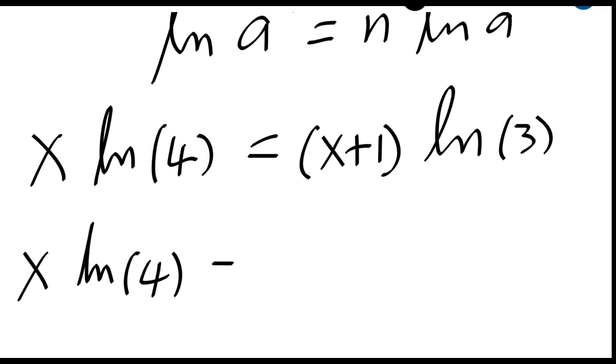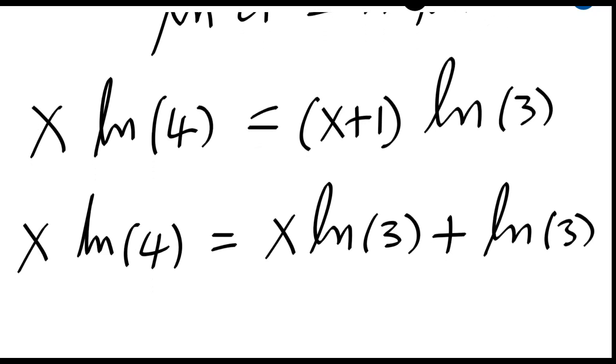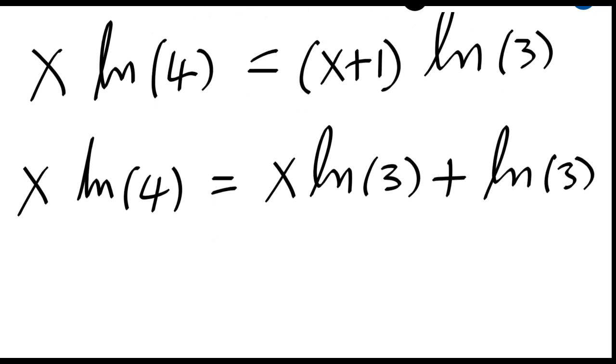Let me rewrite my equation as x ln of 4 which is equal to x ln of 3 plus ln of 3. If I send this to the other side, I will have x factored out: ln of 4 minus ln of 3.